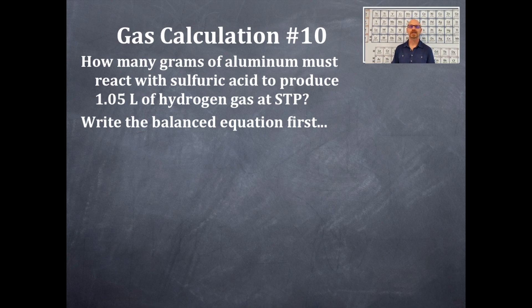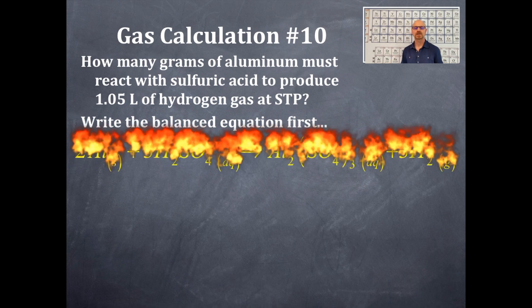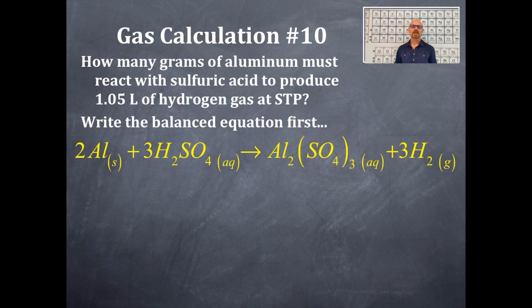Gas calculation number 10. How many grams of aluminum must react with sulfuric acid to produce 1.05 liters of hydrogen gas at STP conditions? First thing that we need to do is write a balanced equation. So we've got aluminum, that's a solid, and then we've got sulfuric acid. Remember, it's coming from the sulfate ions, so that's H2SO4. And this is a single displacement reaction producing aluminum sulfate and hydrogen gas.